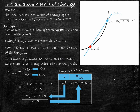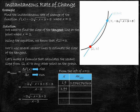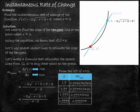We continue this process, each time getting a little closer to our point of tangency. Using x = 1.99, we substitute into the slope formula and get the next value. We then use x = 1.999 and substitute into the slope formula. Note: if you have the option of storing our secant slope formula in your calculator and telling it to substitute these values, that makes the process much faster.